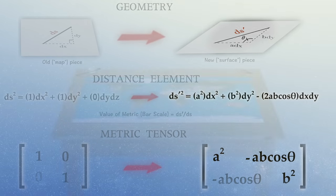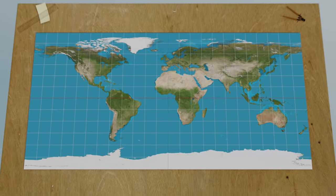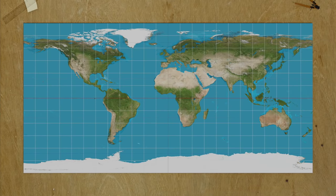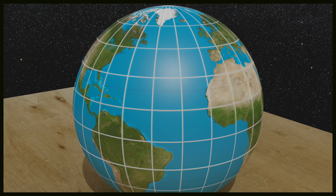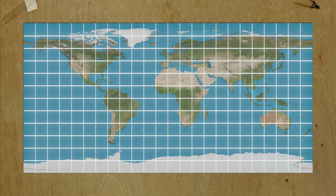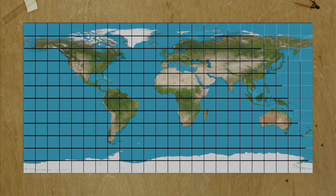As an example of this overall process, let's take a look at an equirectangular projection of the Earth. This projection takes the Earth's lines of latitude and longitude and gives them equal spacing on a flat map, thus forming a standard Cartesian coordinate grid.